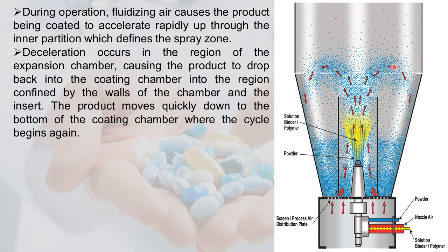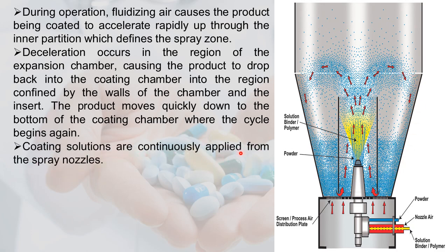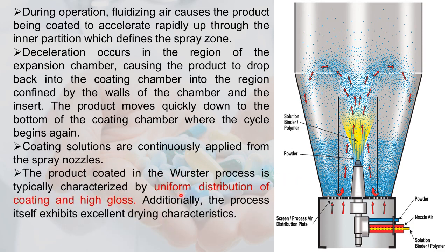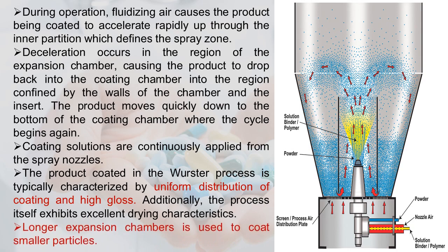The coating solution is continuously applied from the spray nozzle. Products coated in the Wurster process are typically characterized by uniform coating distribution with high gloss. The process exhibits excellent drying characteristics. A longer expansion chamber is used for smaller particles — powders use the longest chamber, granules a medium length, and tablets a shorter expansion chamber.